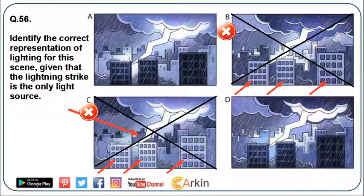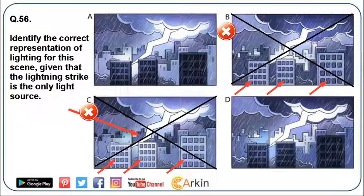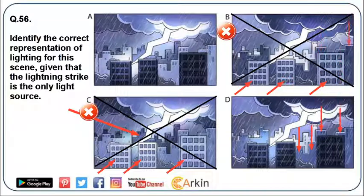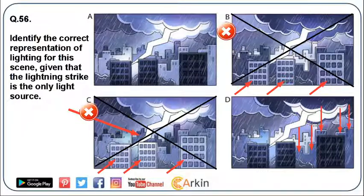Now the remaining options are option A and option D. Let us observe them both. Both options look almost similar. If you observe properly, the second row of buildings in option D looks dark. Since there are taller buildings in front of this second row, they will throw a reflection of light onto these second-row buildings. So option D is not correct.